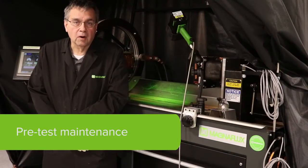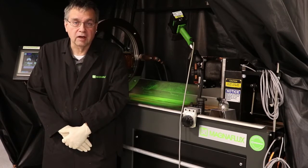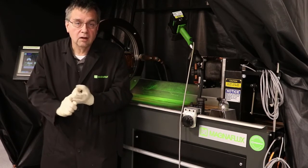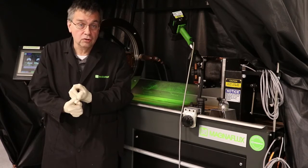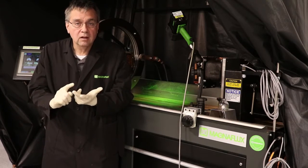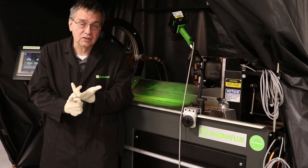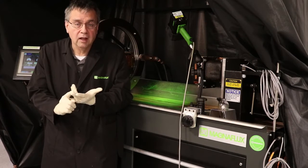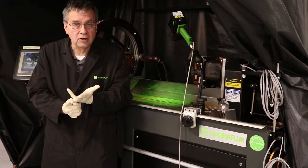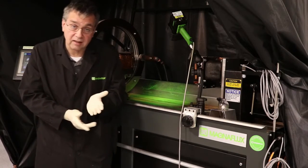Prior to testing the part, you must check a couple of things to make sure your machine is actually ready. One is the ultraviolet light concentration using a UV meter, the visible light so you have less than two foot candles in your inspection area, and you also must check the bath concentration. I'm going to show you how to check the bath concentration now.